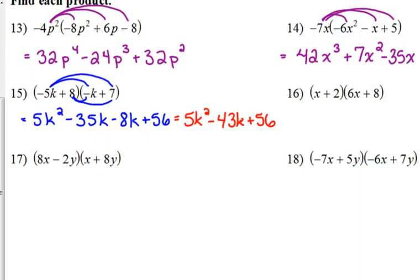Let's look at number 16. This one's a little bit simpler, not quite so many negatives here. x times 6x is 6x². I'm going to skip a step here. The outside gives us 8x, the inside gives us 12x, so that gives us plus 20x in the middle, the linear term. And then last, 8 times 2 is 16.